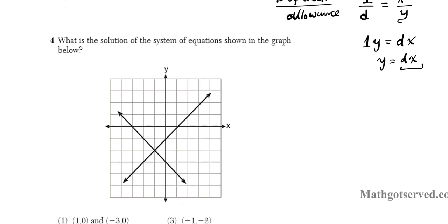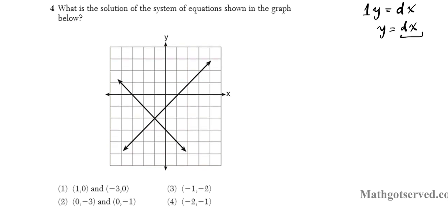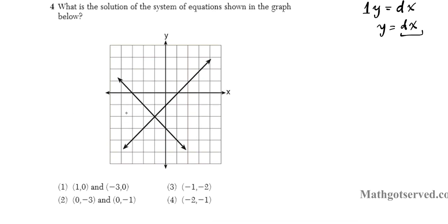Alright, let's move on to question four. It says what is the solution of the system of equations shown in the graph below? The solution to a system given in graphical form is the coordinate value of the intersection of the two lines. So we have two lines, L1 and L2. They intersect at this point. So the coordinates of that intersection is your solution.